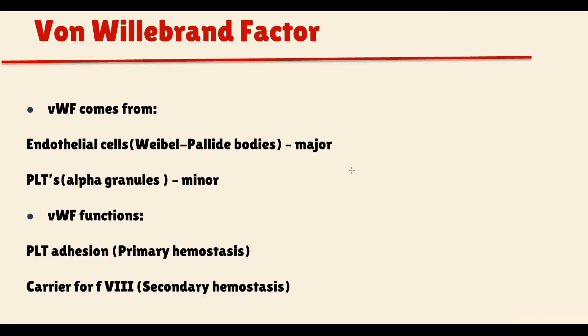Von Willebrand factor is a glycoprotein that participates in both primary and secondary hemostasis. In our organism, we have two sources of von Willebrand factor: endothelial cells, where von Willebrand factor is contained inside the Weibel-Palade bodies, and it is the major source; and platelets, where von Willebrand factor is stored in alpha granules, and it is a minor source.